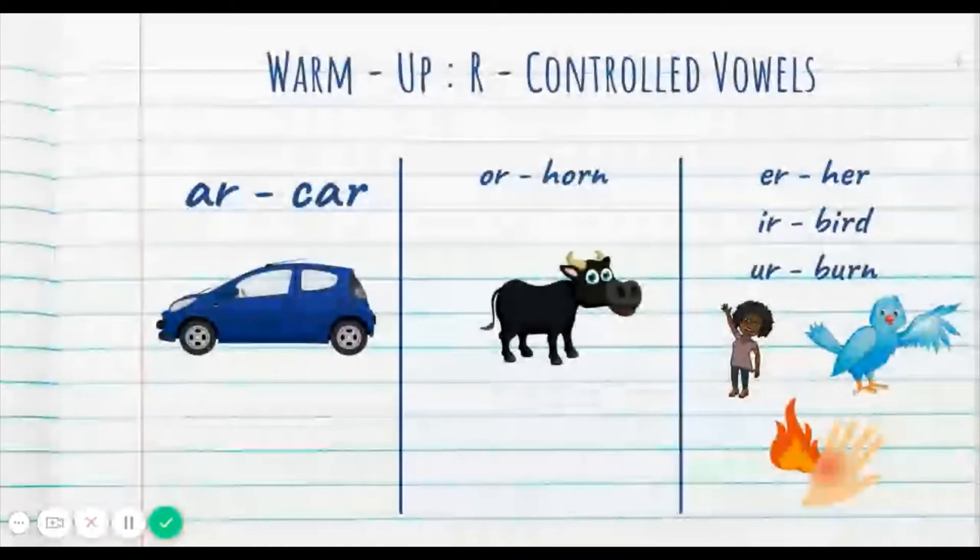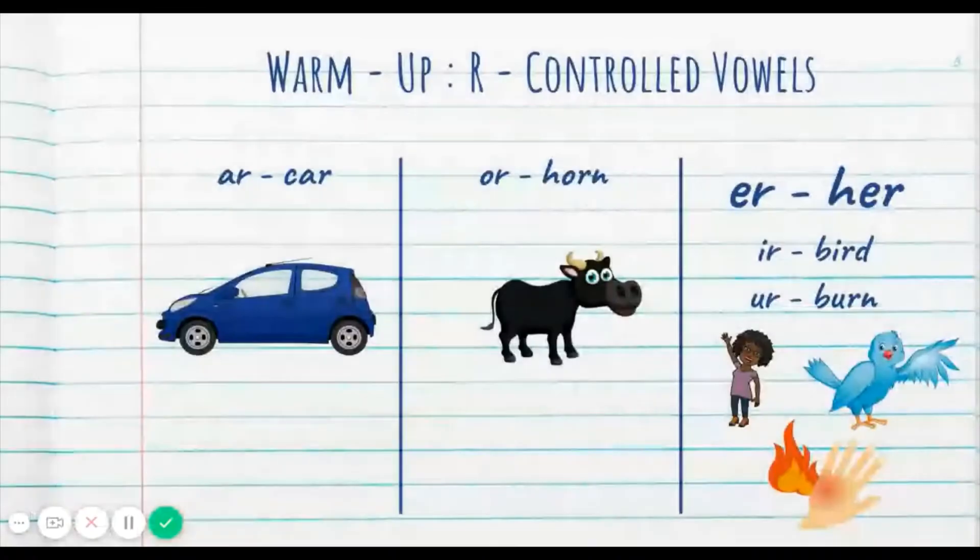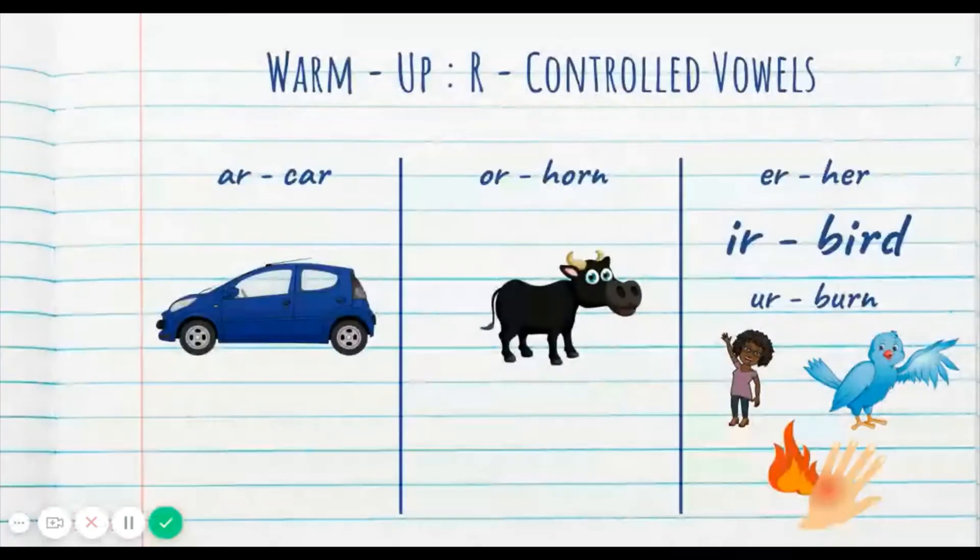A-R, car, R. Go. O-R, horn, OR. Go. E-R, her, ER. Go. I-R, bird, ER. Go. U-R, burn, ER. Go. Oh, my gosh. What's that? Y'all on fire. Yes. Great job. We went through that. No problem.